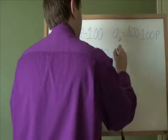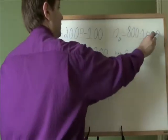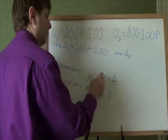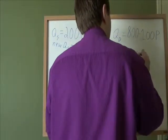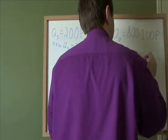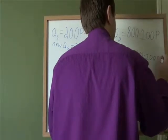What about the quantity demanded? The new quantity demanded, where they used to have p dollars there, we're going to have to put p plus 1 in parentheses. New quantity demanded is 800 minus 100 times p plus 1.